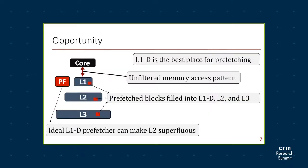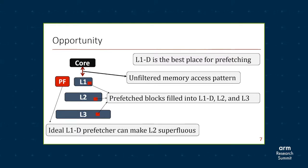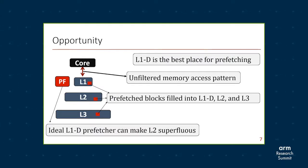Let's see what are the benefits of having a prefetcher at L1. L1 is closer to the processor and it's the best place for observing and learning the memory access patterns, which are unfiltered — compared to L2 and L3 that get filtered access, L1 sees the requests coming directly from the processor core. Additionally, if we have a better L1D prefetcher that can aggressively hide the memory latency, there is no need for L2 prefetchers and L2 prefetchers can become super simple.